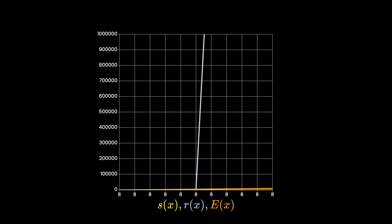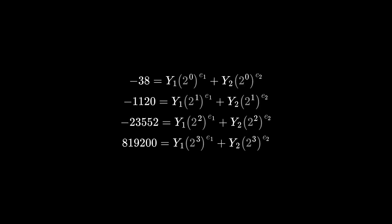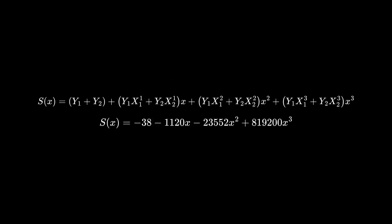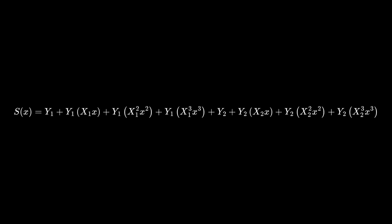Then when we subtract the error polynomial from the received polynomial, it becomes 0 at these points. So we can get a bunch of equations that look like this. I'll replace instances of 2 to the power of something with x, with the subscript representing which error it refers to and the exponent representing the exponent. And this is just a nice little notation thing you'll find everywhere else as well. To solve all these equations, I'm going to do something a bit weird: I'm going to take these and put them into a polynomial. I'll call this a syndrome polynomial.